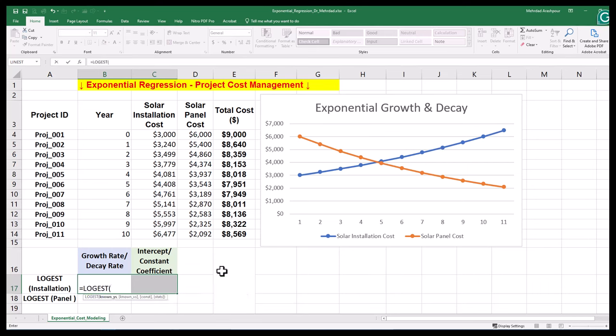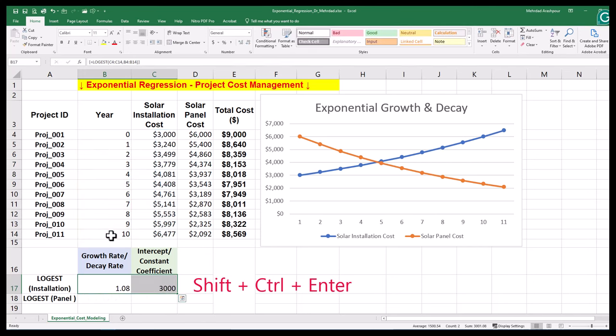Simply select an array of two cells and insert a function. The first argument is known Y's, which are installation costs in this example. The second argument after the comma is known X's, which is the year. Remember to press shift ctrl enter for array calculations in Excel.